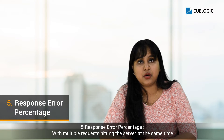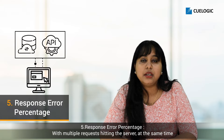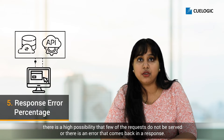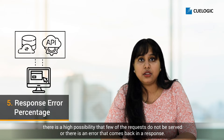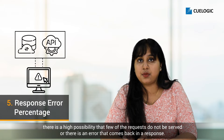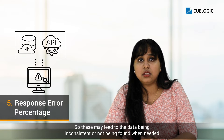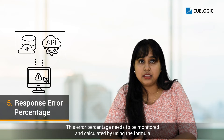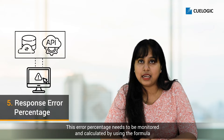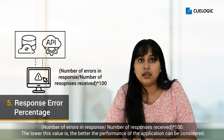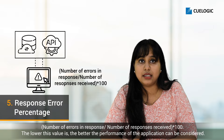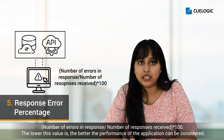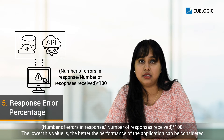Next, let's speak about the response error percentage. With multiple requests hitting the server at the same time, there is a high possibility that few of the requests are not served or there is an error that comes back in a response. This may lead to the data being inconsistent or not being found when needed. This error percentage is calculated using the formula: number of errors in a response divided by the number of responses received, multiplied by 100. The lower this value is, the better the performance of the application can be considered.